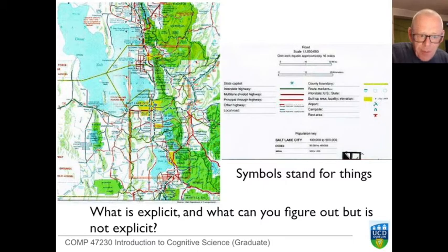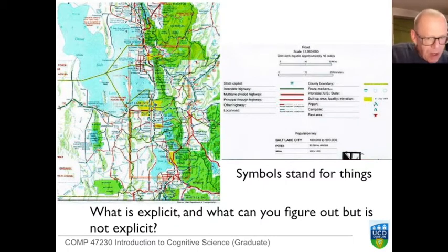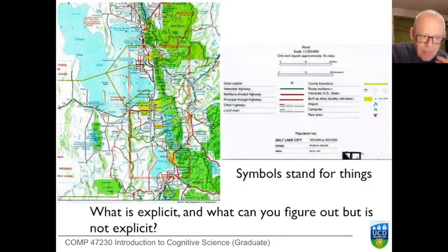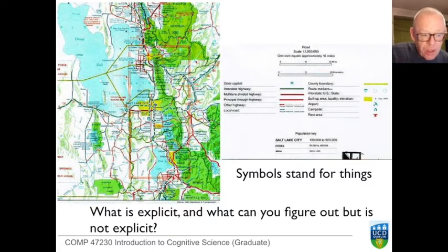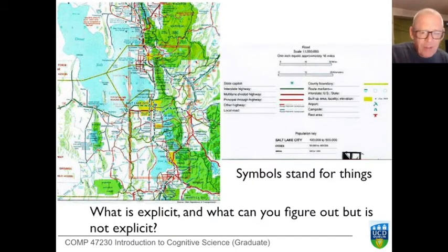Notice the distinctions here: there's information that's explicit and information that's implicit — you have to work harder to get at implicit information. There are map elements that stand in a conventional relationship to things on the ground, and map elements that stand in a principled, lawful relationship to things on the ground. Any of these might be called representations.